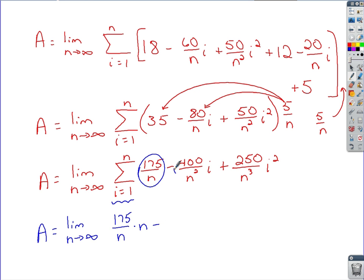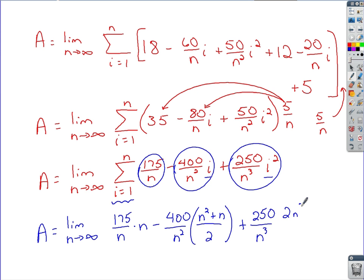Minus, for this guy here, you've got 400 over n squared times the theorem for i, which would be n squared plus n over 2. Plus, for this one, you've got 250 over n cubed times the theorem for i squared, which would be the 2n cubed plus 3n squared plus n over 6.